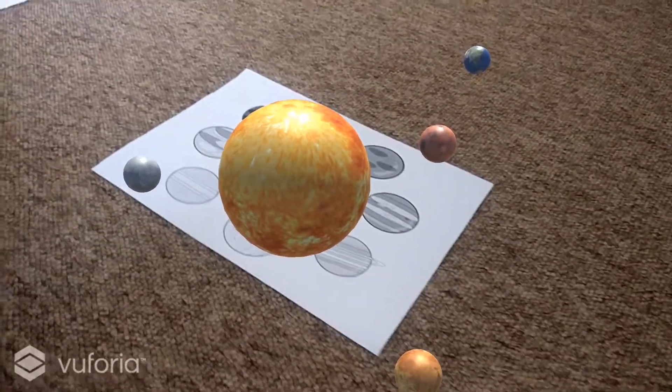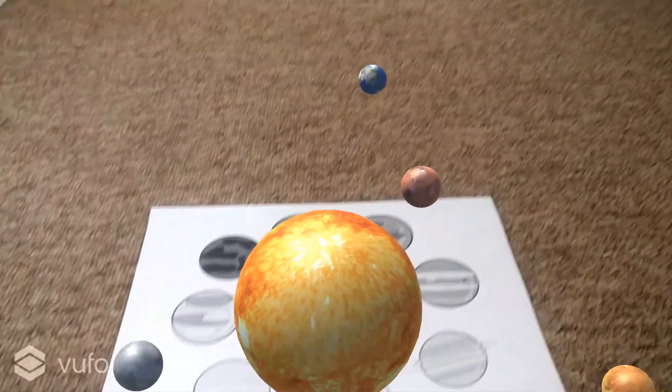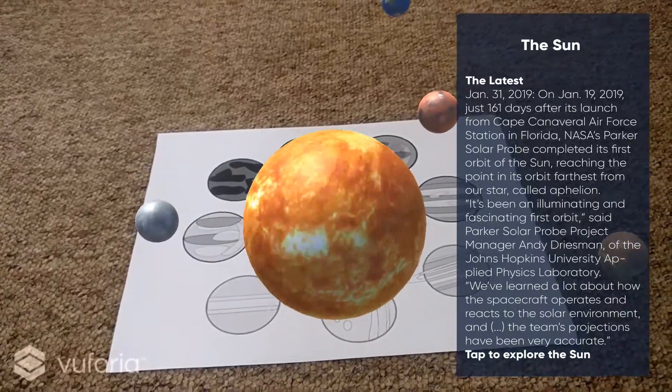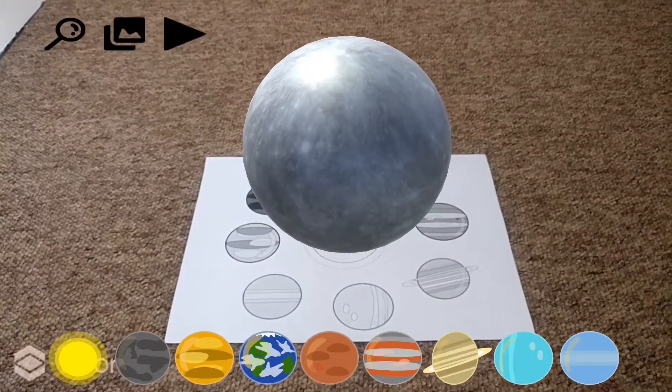For this, I have developed an augmented reality solar system application where the user can interact with all the planets. The user gets feedback when they tap on the spheres as the planets start rotating and the user is presented with the latest news section for each. They can then choose to explore individual planets.